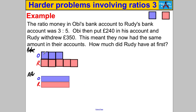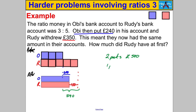Comparing before and after is the key. Obie put 240 pounds in, so the increase from Obie's original to after is worth 240. Rudy withdrew 350, so the decrease from Rudy's original to after is 350. Overall, the difference between one end and the other must be 240 plus 350, which is 590. That spans two boxes in the original, so two parts is 590. One part is therefore 590 divided by 2, which is 295.